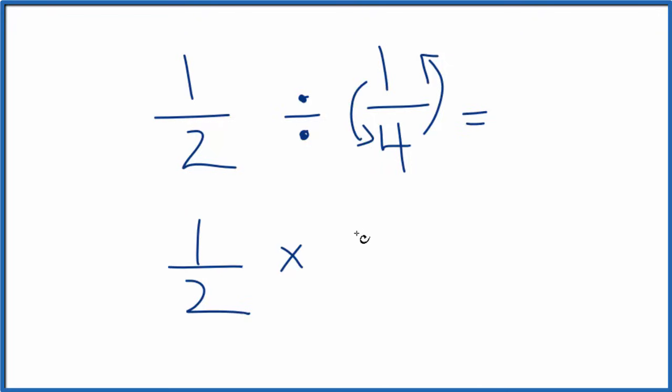So we put the 4 on top, the one on the bottom, that's the reciprocal, and now it's a simple multiplication problem. 1 times 4 is 4. 2 times 1 is 2.